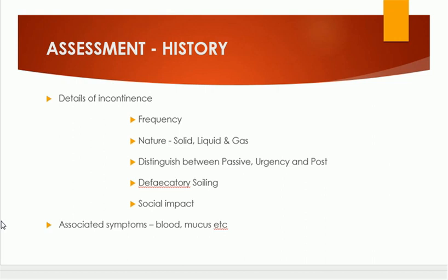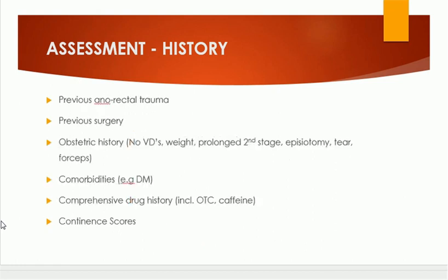Associated symptoms may include the patient passing blood, mucus, or sometimes pus. We have to ask about any previous anorectal trauma, any previous surgery, and a detailed obstetric history including number of vaginal deliveries, prolonged second stage, episiotomy, use of forceps during delivery, and tears during delivery.